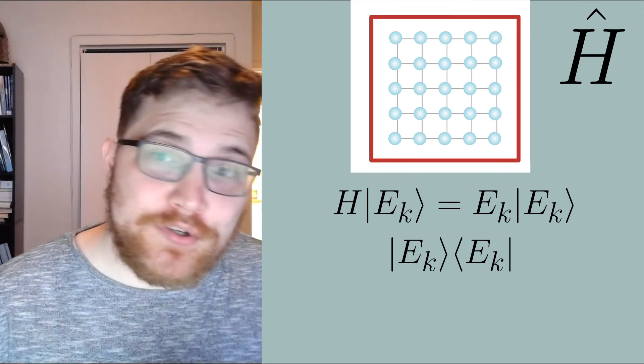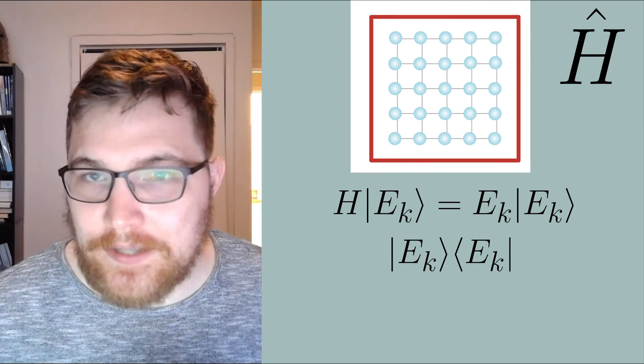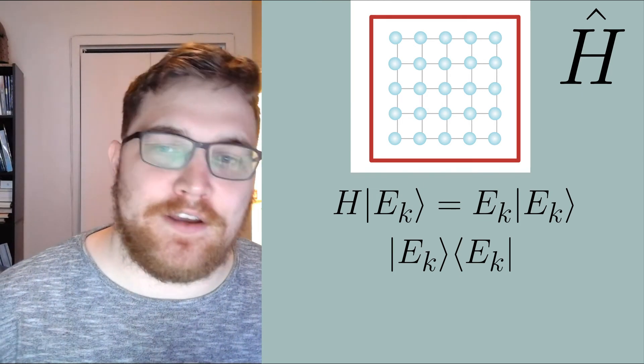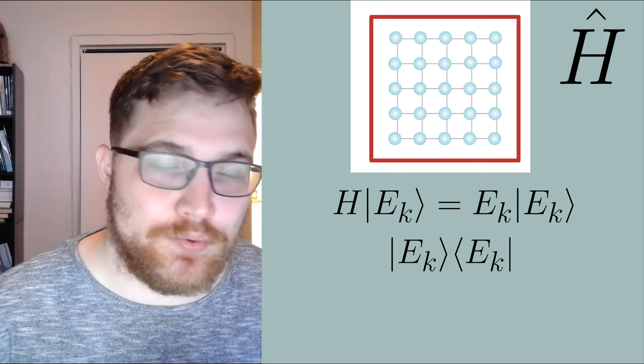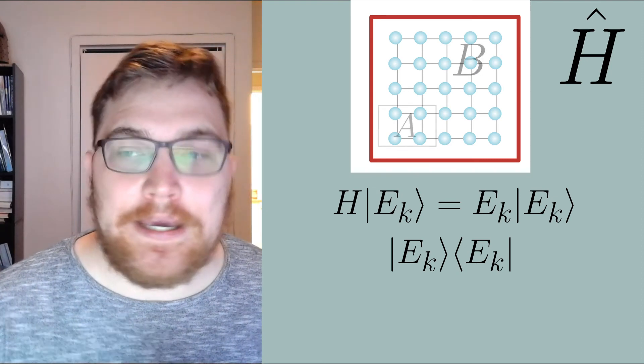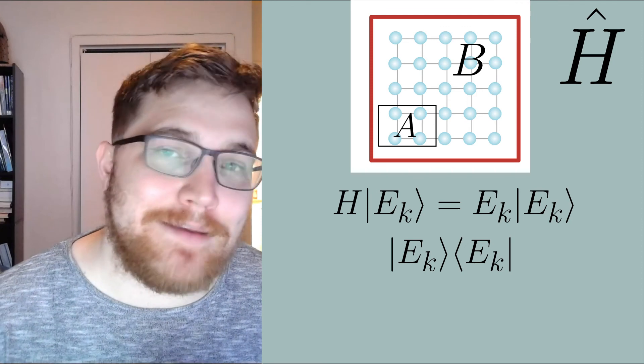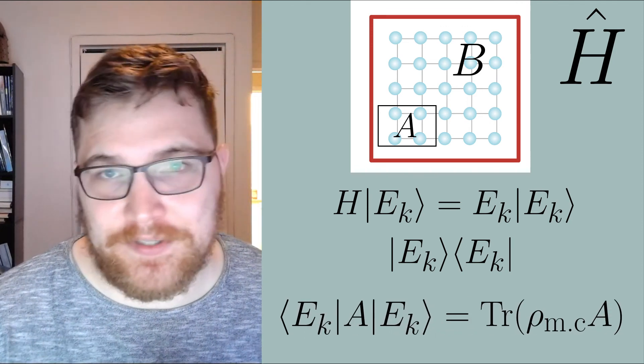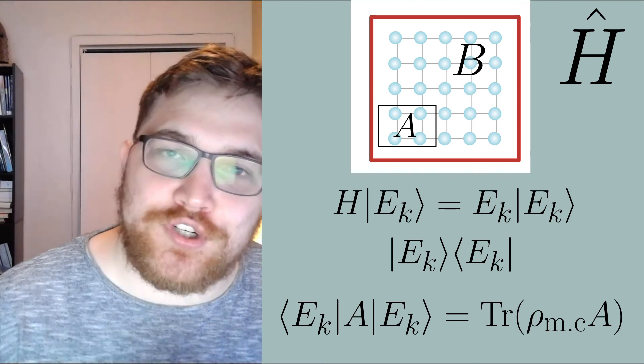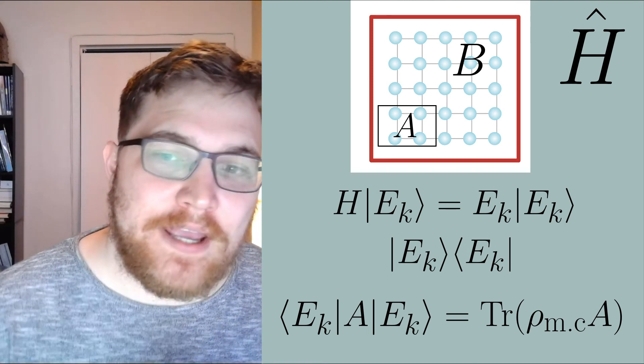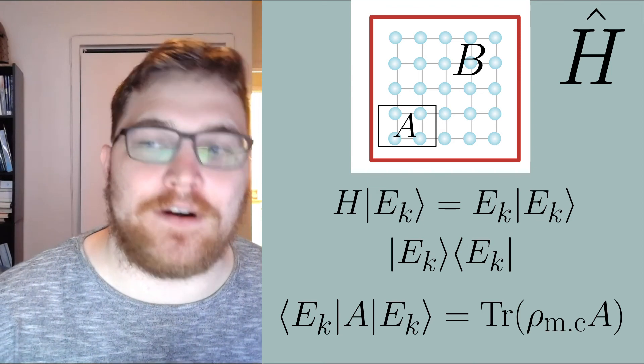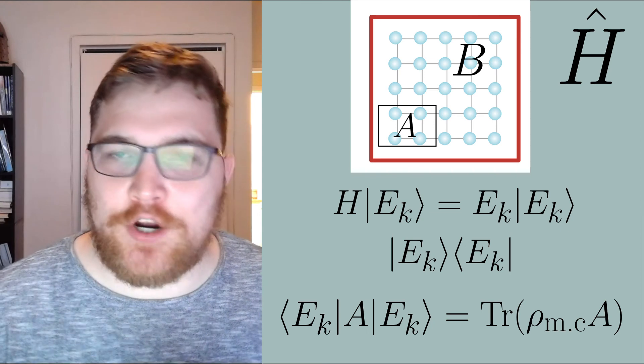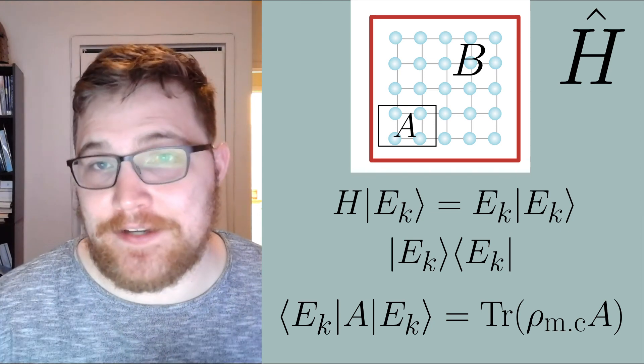So this is definitely a pure state. So why call it an ensemble? Well, the eigenstate thermalization hypothesis tells us that if we cut our system into two subsystems A and B, then the eigenstate Ek agrees with the microcanonical average for observables on the subsystem A. This tells us that the energy eigenstates themselves encode the averages we are interested in computing in statistical mechanics. If this sounds interesting, check out my two videos on the eigenstate thermalization hypothesis. I'll put their links in the description.